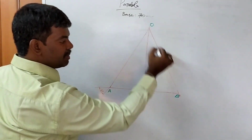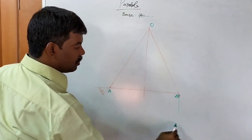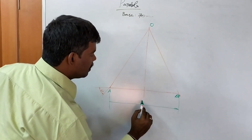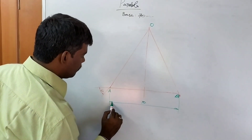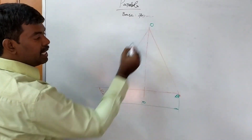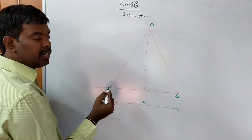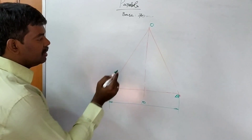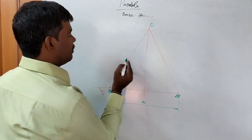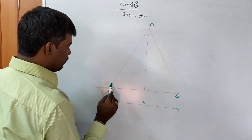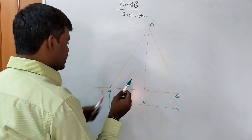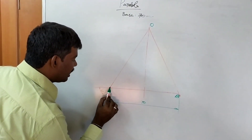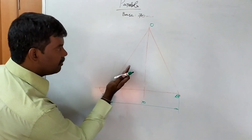Divide the OA distance into N equal parts. For example, 8 equal parts. You draw an inclined line at any angle with OA, take some radius X, and mark 1, 2, 3, 4, 5, 6, 7, 8 — that is 8 equal parts. You take N number of equal parts; the choice is ours.